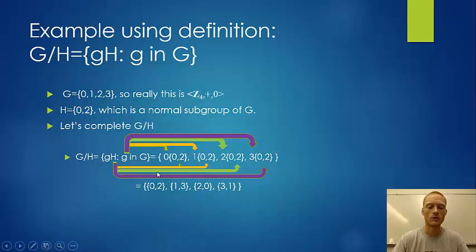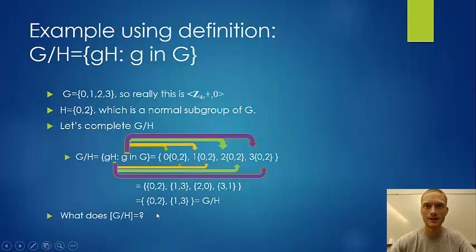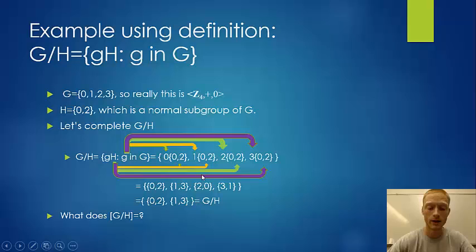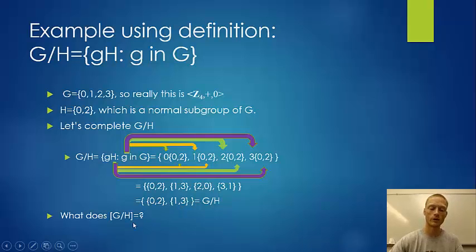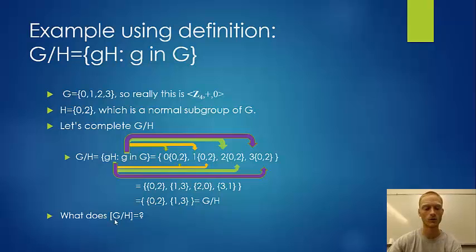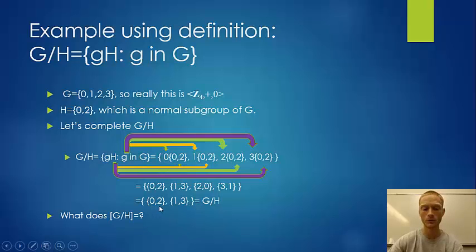We compute each coset: 0 + H gives {0, 2}, and 1 + H gives {1, 3}. We notice that 2 + H gives {2, 0}, which is the same as {0, 2}, so we don't need to list it twice. Our distinct cosets are {0, 2} and {1, 3}, so the order of G/H is 2 — there are two cosets.